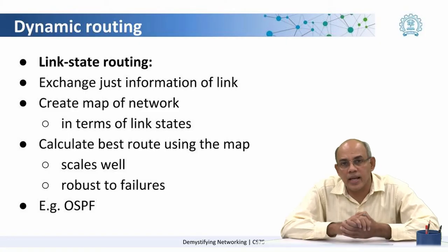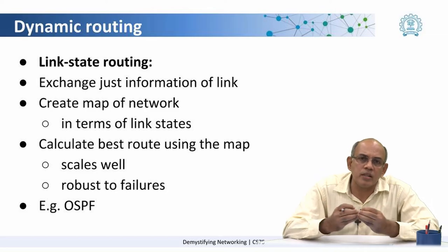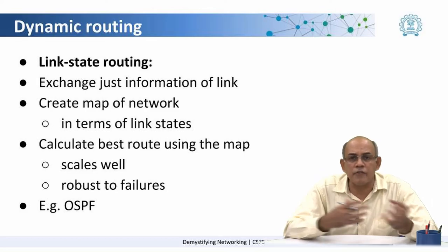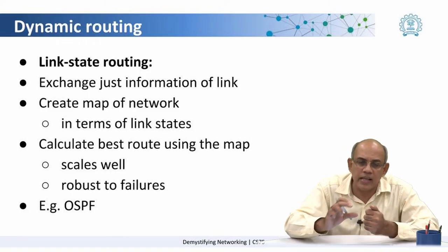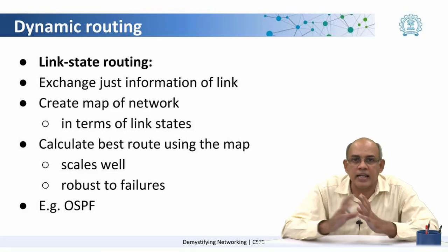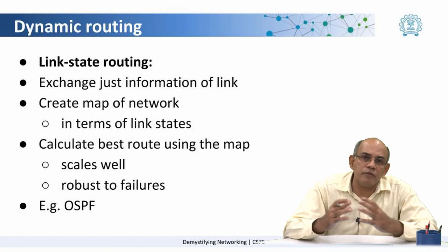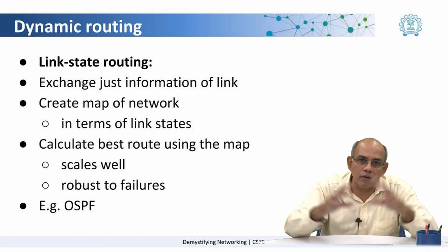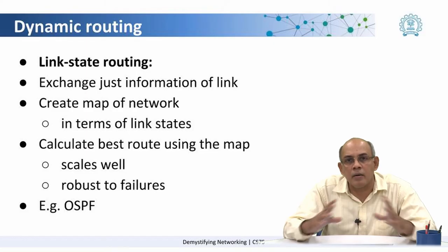A third mechanism is called link state routing, wherein the routers only exchange information about the links. Instead of exchanging the entire routing table, all they do is exchange information about the links to which they are directly connected. And as the router gets information about links from all over the network, the router is able to create a topology or a picture of the network.